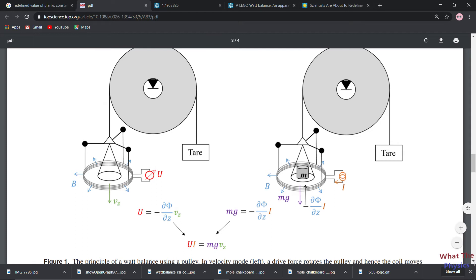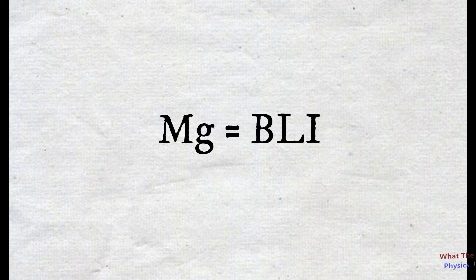In the weighing phase, it balances the weight under gravity by applying some magnetic force on it. At the balance point, Mg = BLI. Mass multiplied by the acceleration due to gravity equals magnetic field multiplied by length of wire in coil multiplied by the current flow.